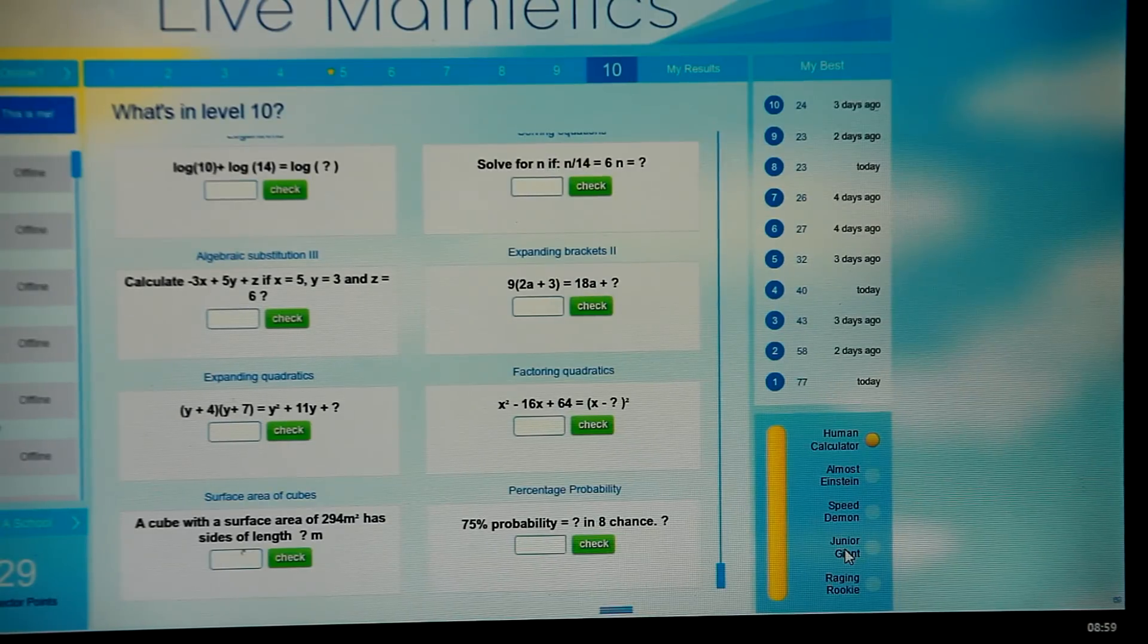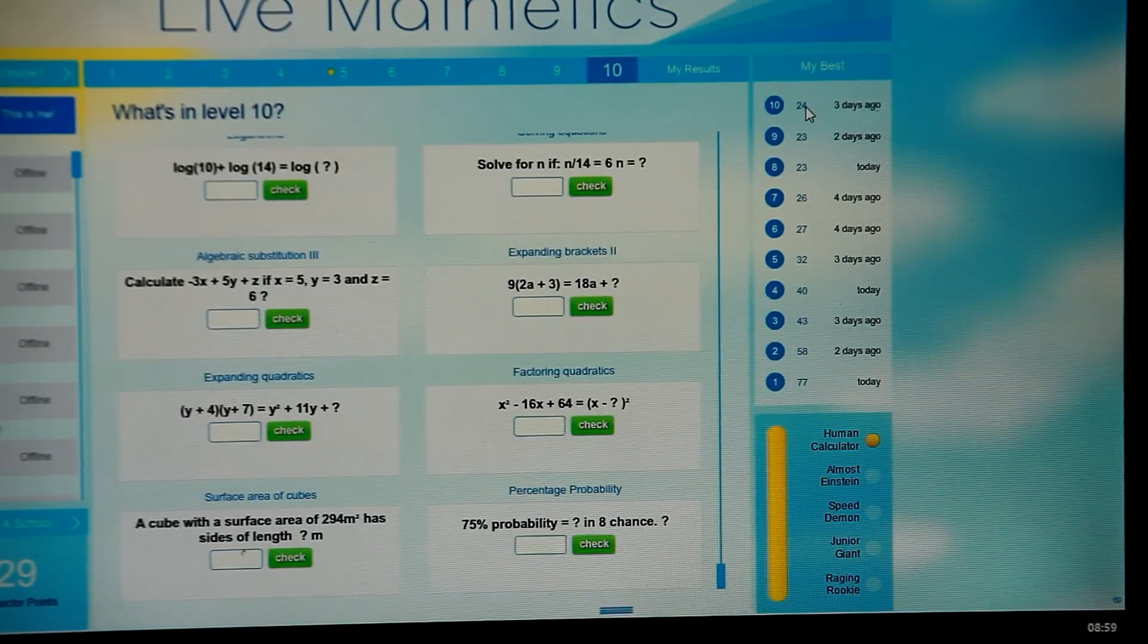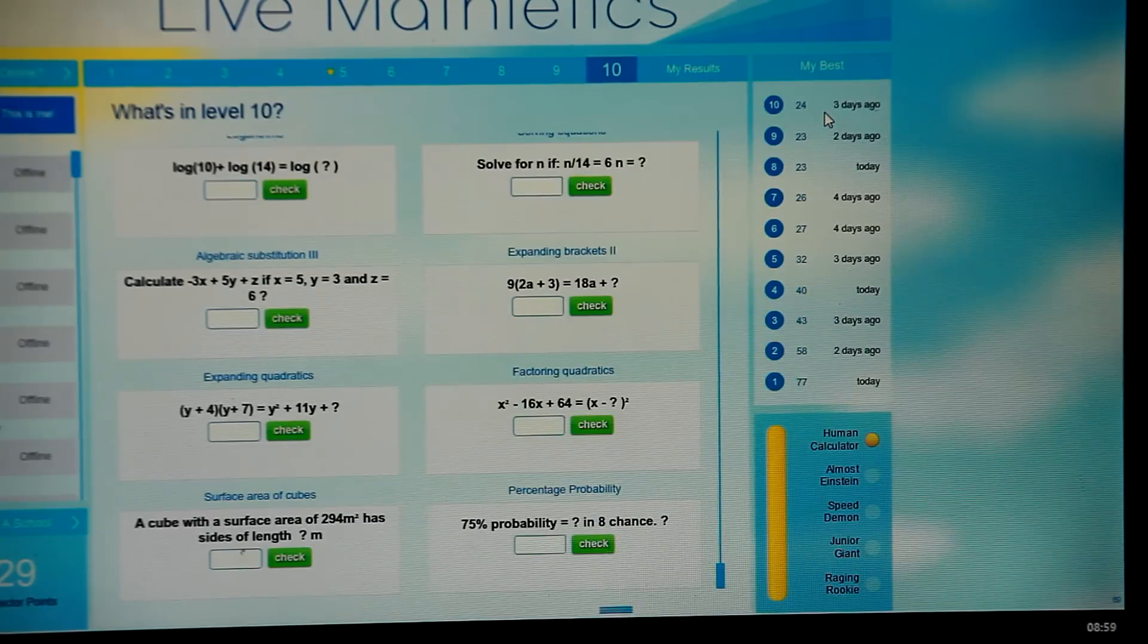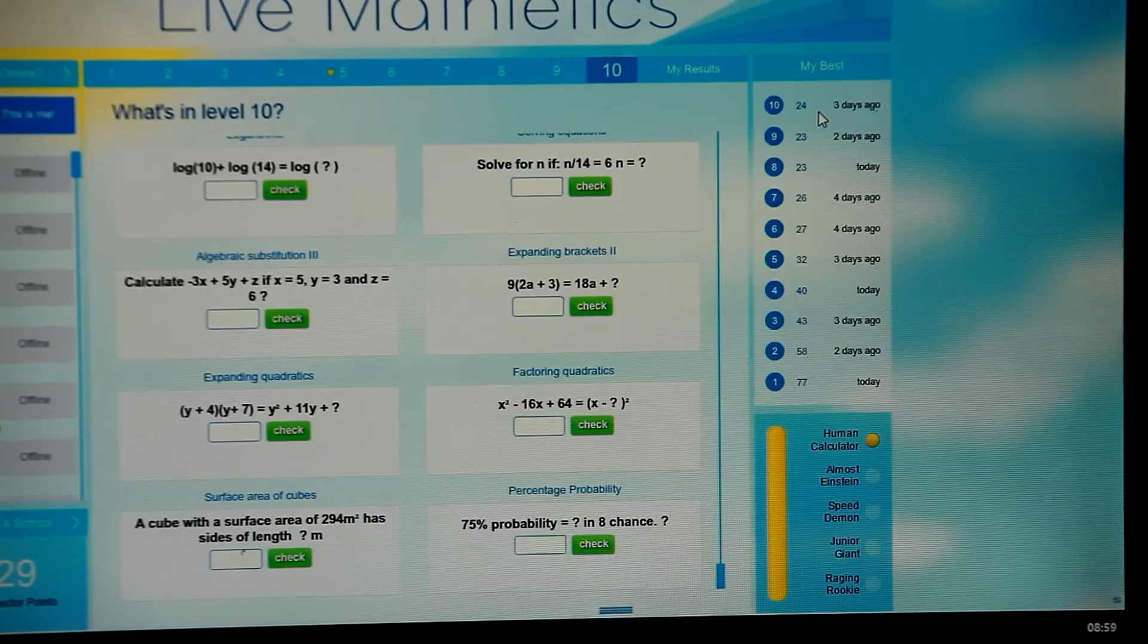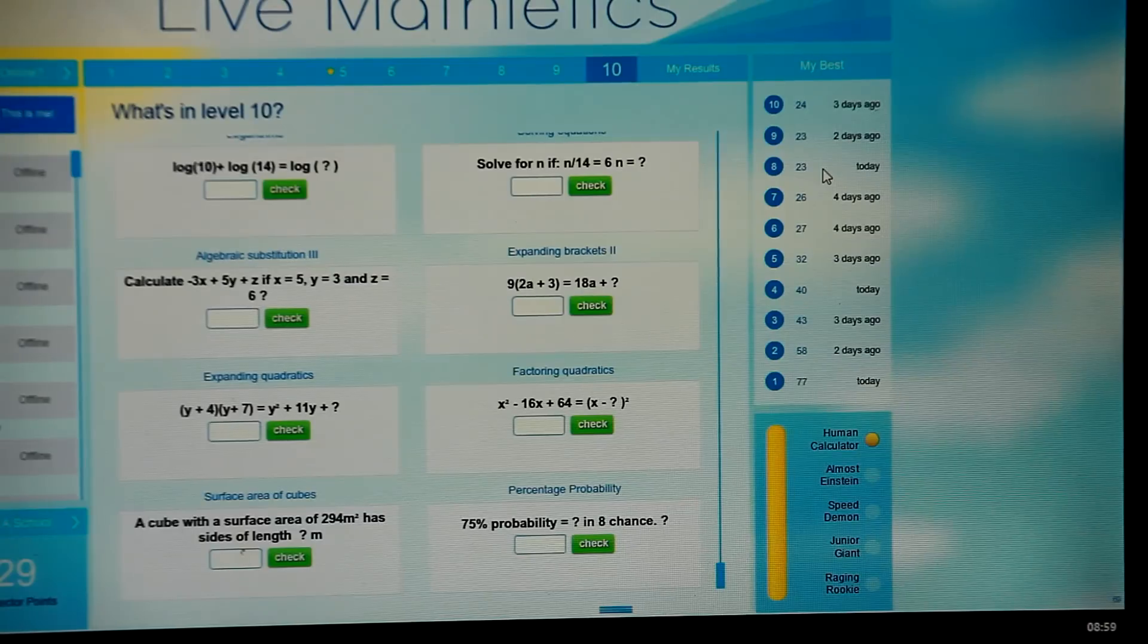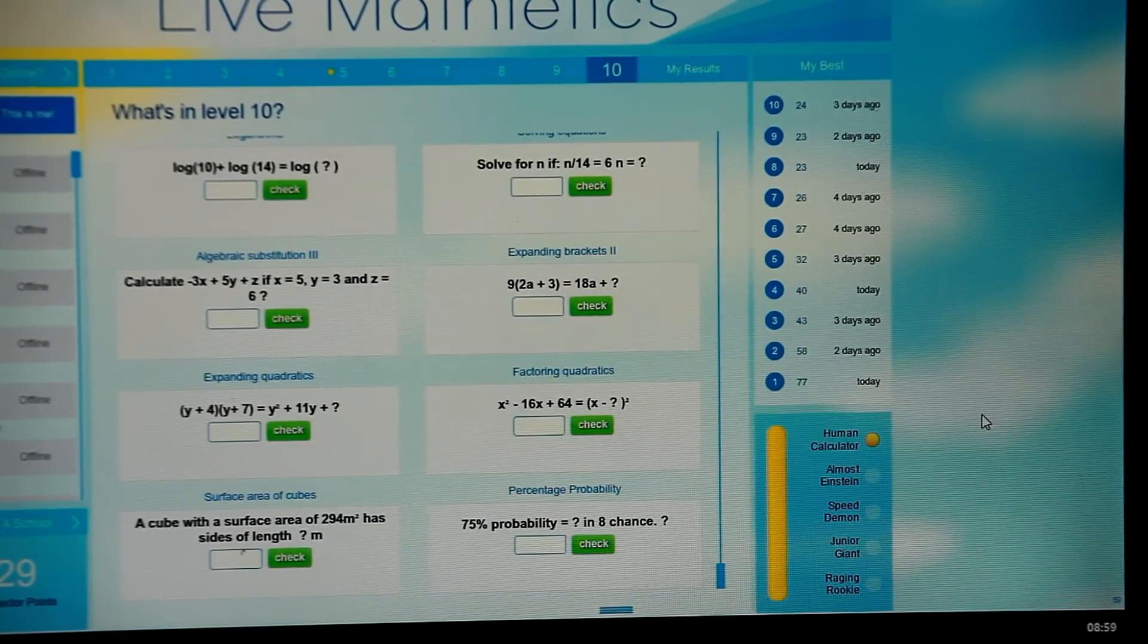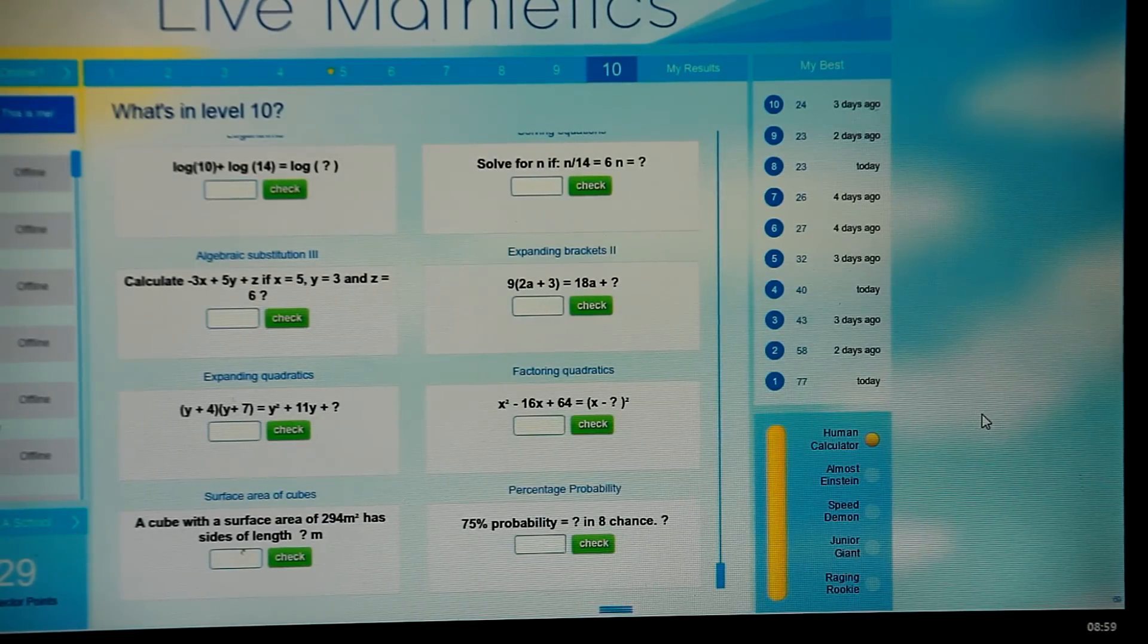So thank you for listening. Hopefully that's been some help for you there. And by the way, these scores that you've been seeing down the right here, they have all been done by my young son who's still eight, nearly nine, but he's done those sort of scores, 24 on level 10, 23 on nine and eight. You can see the scores there. He's got the best in his school even though he's still in grade four, he's beaten people two years ahead of him.